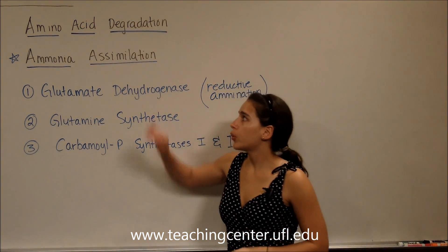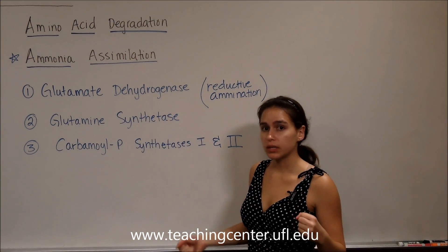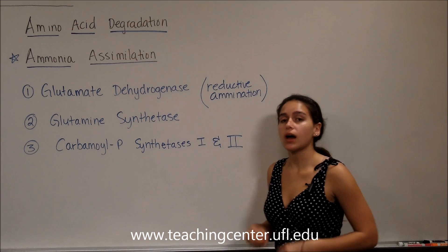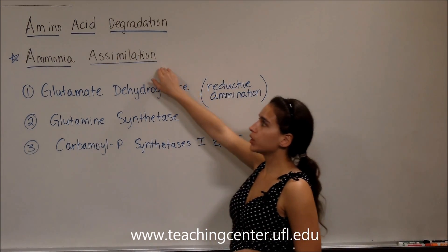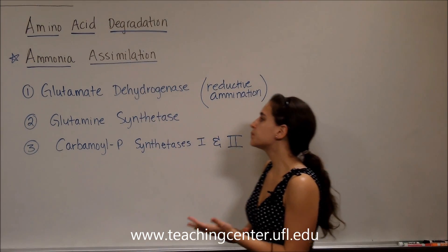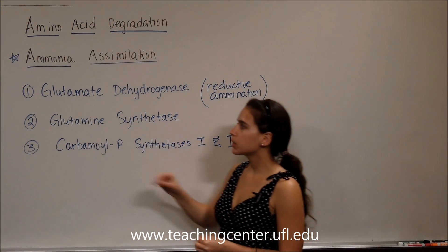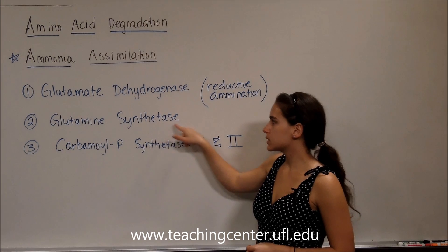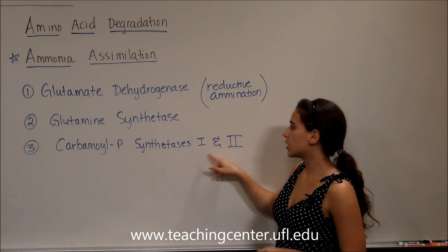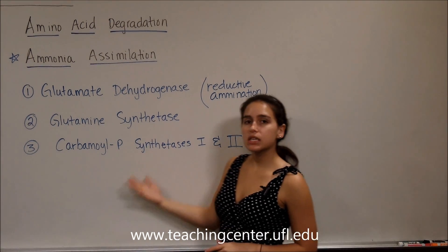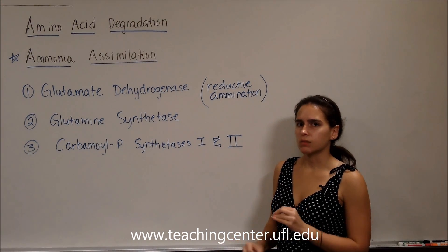The many enzymes we'll be talking about in ammonia assimilation are going to be glutamate dehydrogenase. Remember when we talked about glutamate dehydrogenase earlier, we did oxidative deamination. Now we're going to do reductive amination because we're trying to put ammonia into some sort of molecule. The second one is going to be glutamine synthetase, so somehow we're going to be making glutamine and using ATP because it's a synthetase. The third one is going to be carbamyl phosphate synthetases one and two, and they're very similar because they both make carbamyl phosphate, but they use slightly different mechanisms.